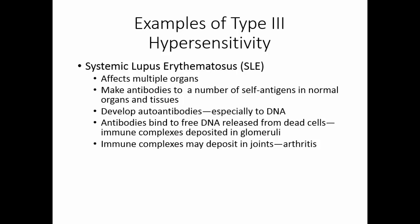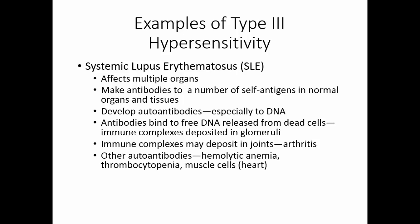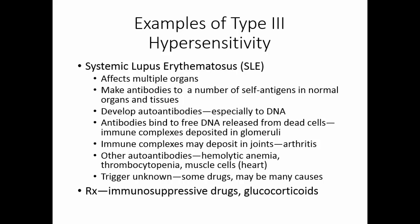These immune complexes may deposit in joints, giving you arthritis. Other autoantibodies can cause hemolytic anemia, thrombocytopenia, or may attack the heart muscle. The trigger is unknown. Some drugs seem to be associated with the development of SLE, but there may be many causes. The treatment is immunosuppressive drugs and glucocorticoids.